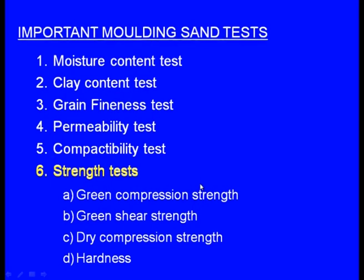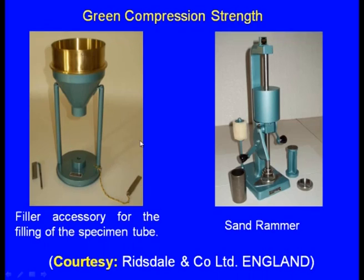Finally, let us see the strength tests. Under the strength test, we have the green compression strength, green shear strength, dry compression strength, and finally hardness. For measuring the green compression strength, we have to prepare the sand specimen in the same way — place the molding sand in the specimen tube and give the rams, generally 3 or 5 rams.